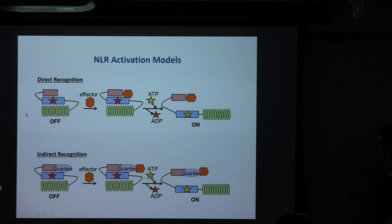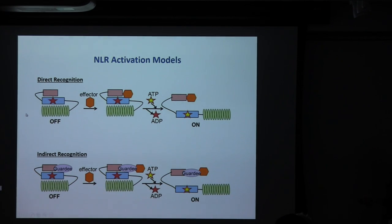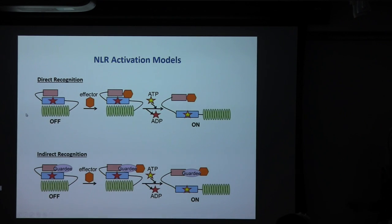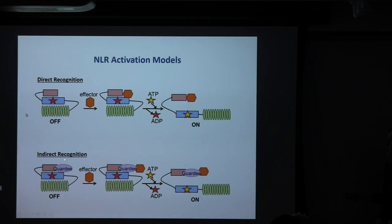In indirect recognition, the model is similar, except the effector is not directly recognized. Rather, the NLR guards a host protein that's targeted by the effector, or a mimic of that host protein. When the effector targets and modifies this guarded protein, this acts as a switch for receptor activation.